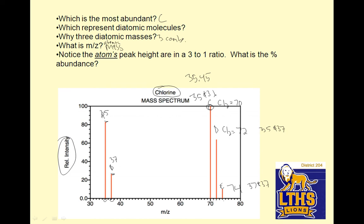Notice the atom's peak height are in a 3 to 1 ratio. So 3 to 1 ratio. What is the percent abundance? So if it's a 3 to 1 ratio, it would be 75% and 25%. So we can figure out that ratio. That's the way it would work. Notice we're talking about the atom through that, not the molecule. These guys would be molecules because they're Cl2.